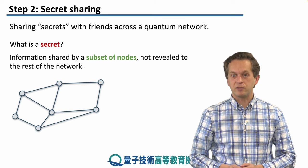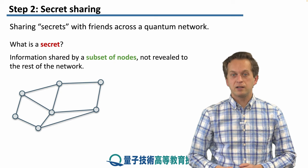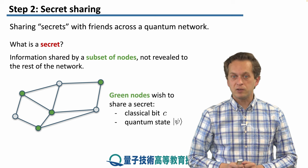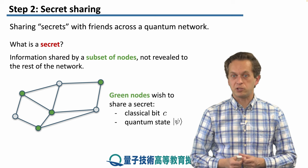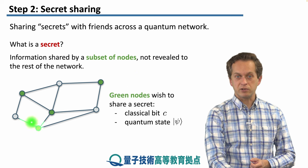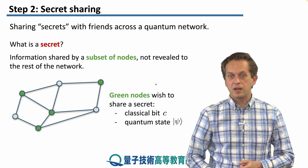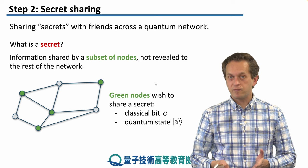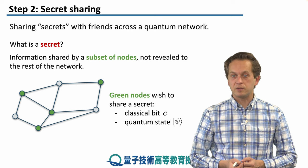Imagine that we have the following network over here and we've got a subset of green nodes that are our friends that are trying to share a secret. So we have four friends represented by these green circles. And they may be wishing to share a classical bit c or a quantum state ψ.